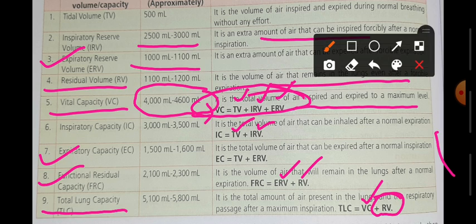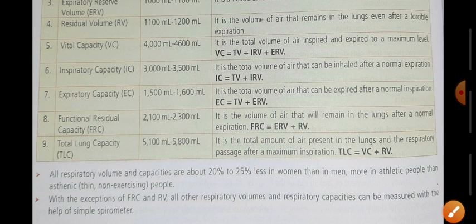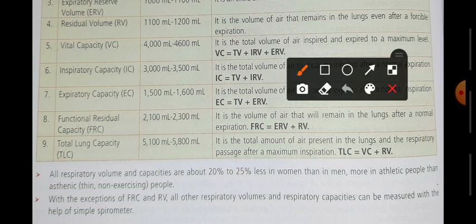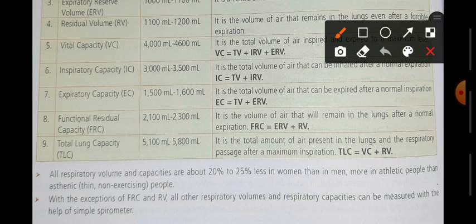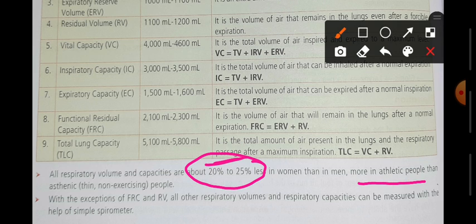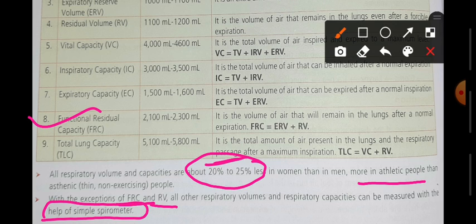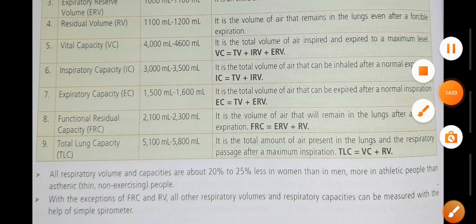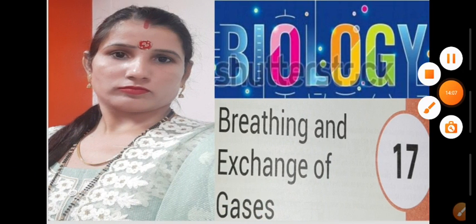An important point to note: all respiratory volumes and capacities can increase or decrease. They differ between males and females — females have about 20 to 25% less capacity compared to males. In athletic persons, this ratio increases. Functional residual capacity (FRC), along with residual volume, is measured using a simple spirometer. We use all these tools to measure respiratory and inspiratory volumes. See you in the next video!